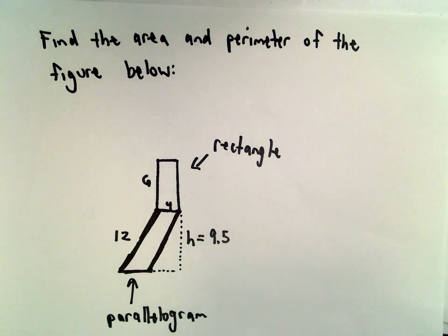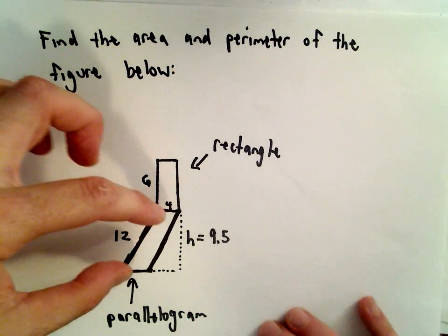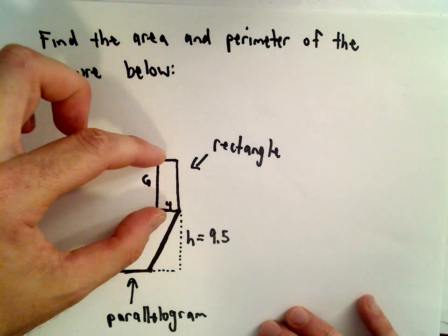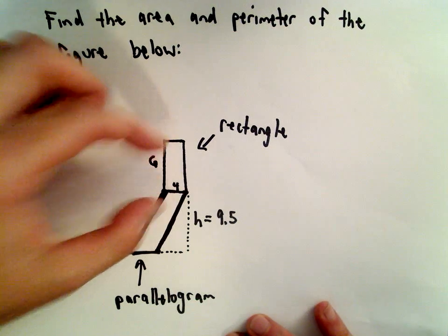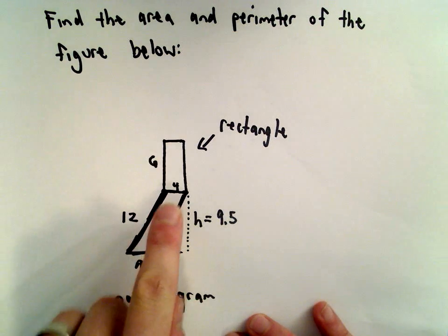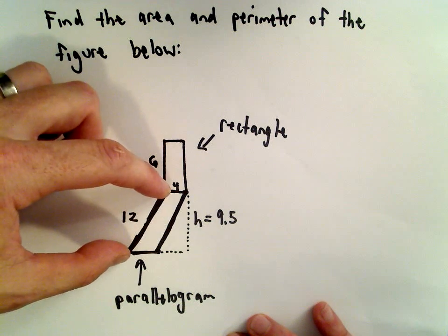In this example, we're going to find the area and the perimeter of this composite figure below. So we've got a parallelogram, and on top of that, we've got a rectangle. So the rectangle has a height of 6 and a width of 4, and likewise, the parallelogram has a width of 4 and it has side lengths of 12.